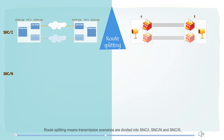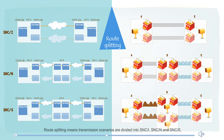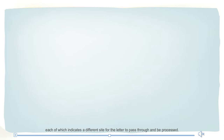Route splitting means transmission scenarios are divided into SNCI, SNCN, and SNCS, each of which indicates a different path for the letter to pass through and be processed.